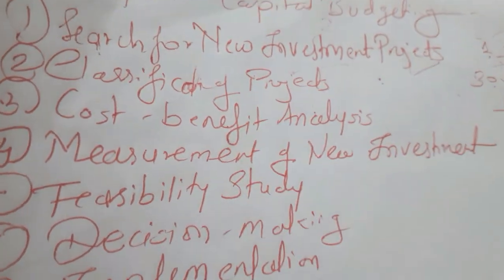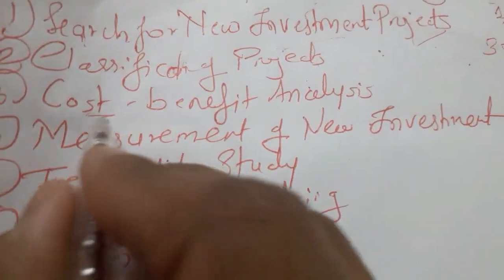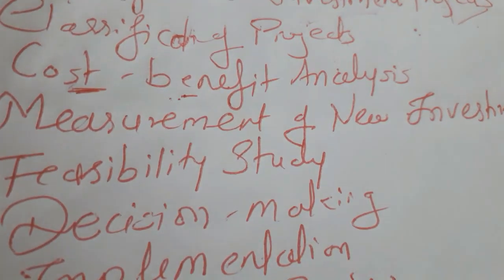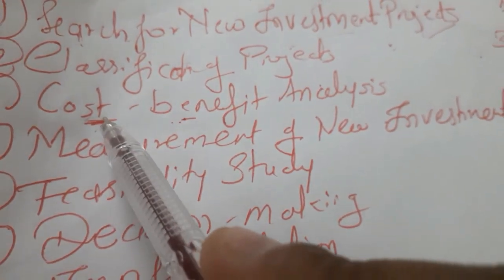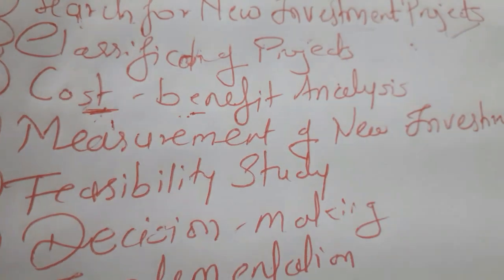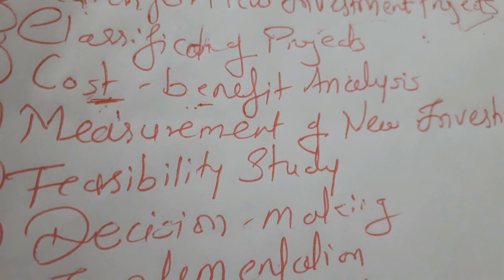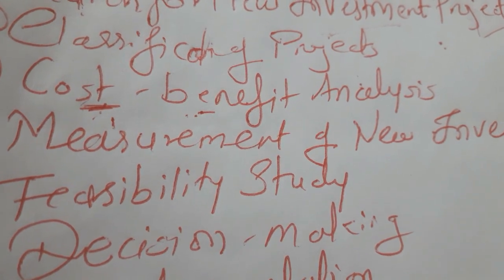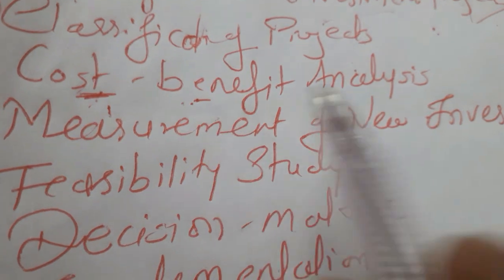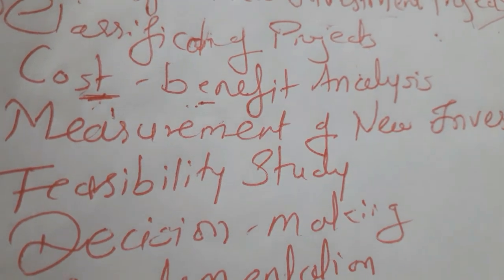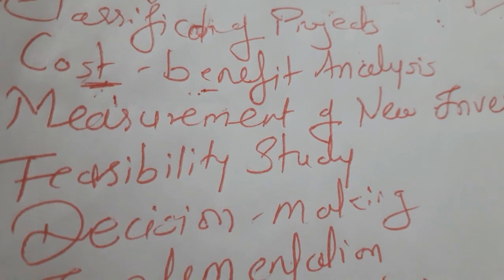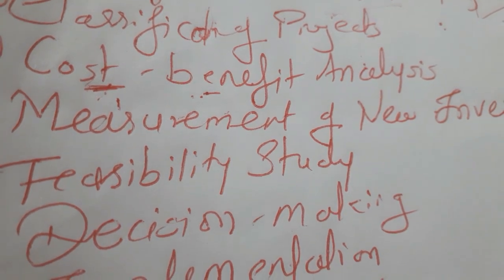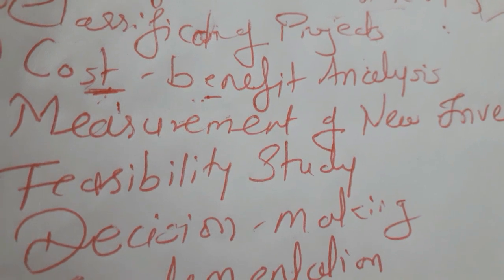The third step is cost-benefit analysis. Cost means money, and benefit means which project gives you more return. You are going to analyze — if you have a 1 crore investment and in 10 years you recover 100 crore, that is a significant return. It is important for an organization to segregate their money into the capital budgeting aspect. That is more important.